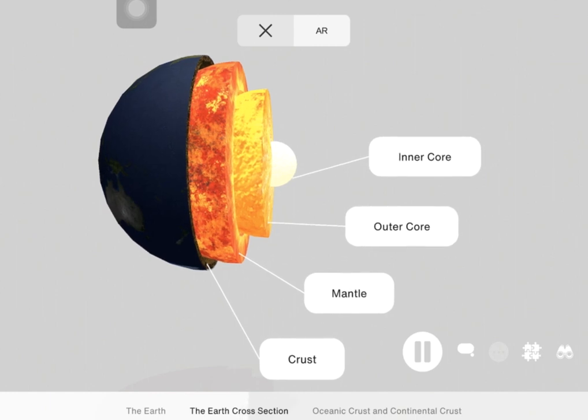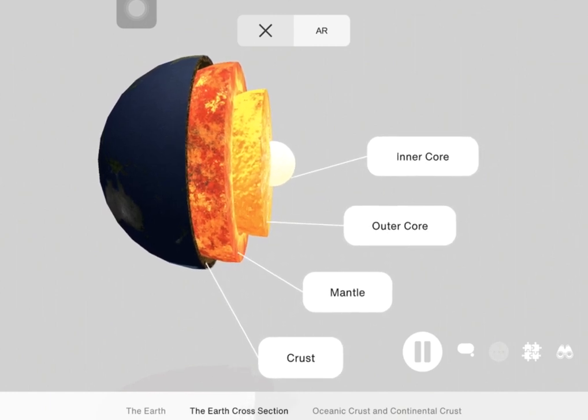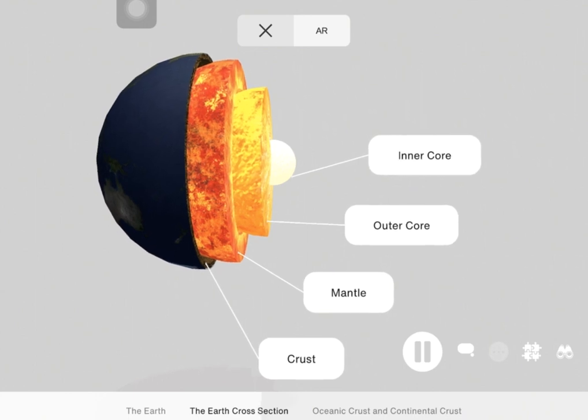The Earth's mantle is the 1800 mile or 2900 kilometer thick shell making up about 84% of the Earth's volume. It is over the Earth's iron-rich core, which takes up about another 15% of the Earth's volume.